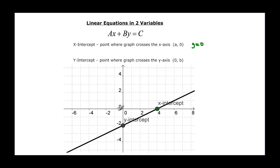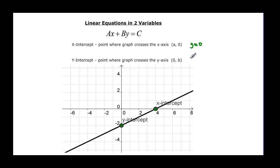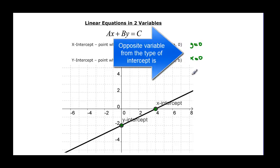For the y intercept, it's where it crosses the y axis — in this case it would be this point on this line. We start at zero, we don't go left or right, so we stay at the origin and just go up or down. It's going to have a zero and then some number for b, the y intercept, so x is equal to zero. In an x intercept the y is always zero; in a y intercept the x is always zero — the opposite variable is zero when you're finding an intercept.